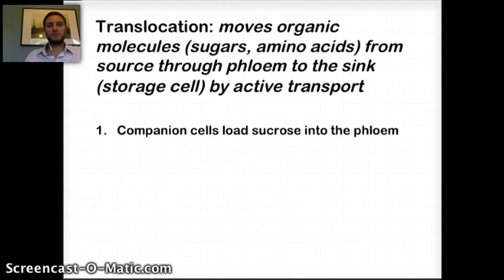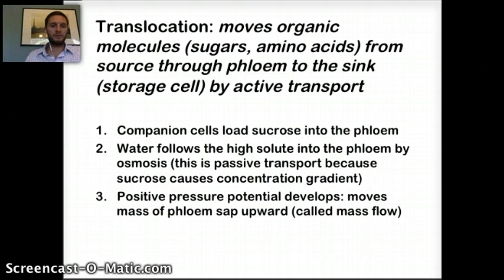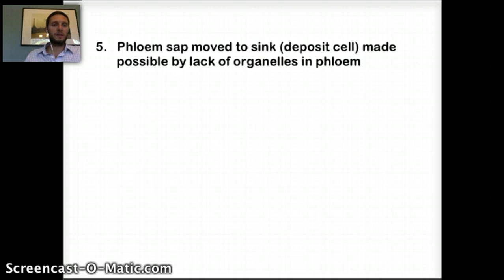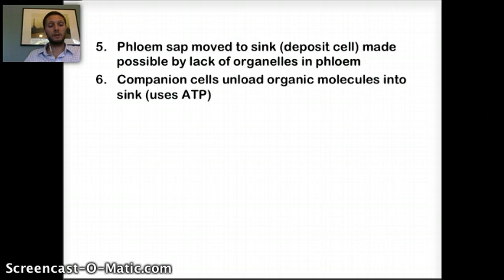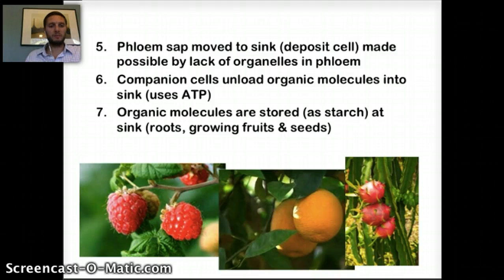Here is a summary of the steps: (1) Companion cells load sucrose into the phloem. (2) Water flows from high solute into the phloem by osmosis — passive transport due to the concentration gradient. (3) Positive pressure potential develops, moving the mass of phloem sap — called mass flow. (4) Phloem sap crosses the sieve plate separating tube cells. (5) Sap moves to a sink cell, made possible by the lack of organelles in the phloem. (6) Companion cells unload organic molecules into the sink cell using ATP. (7) Organic molecules are stored as starch at the sink — in roots, growing fruits, or seeds. This entire process is translocation.